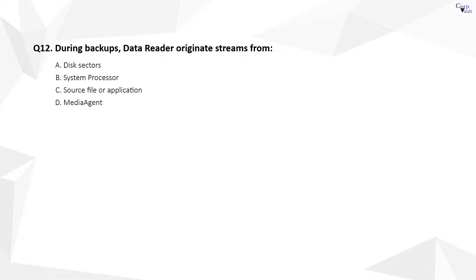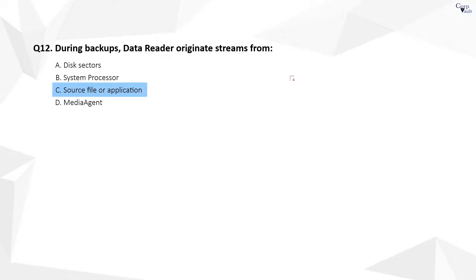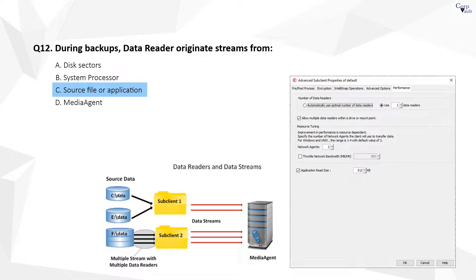Question 12. The correct answer is C. During backups, streams originate from the source file or application, and are created by the data readers that are used to read the source data.